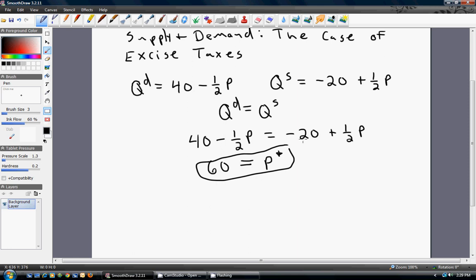The 60 is coming from adding 20 to both sides, so 40 plus 20 is 60. And if we add a half of P to both sides, one half P plus one half P is just P.